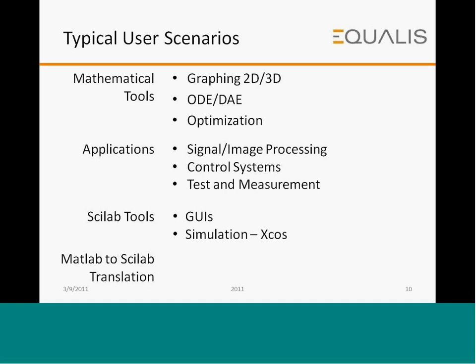Typical user scenarios — this is the next topic I'm going to cover in the webinar today. Various mathematical tools for plotting graphs, solving differential equations, and solving optimization problems. Applications could include signal or image processing, control systems, and test and measurement. The various Scilab tools include a graphical user interface, simulation, and the MATLAB to Scilab translator.